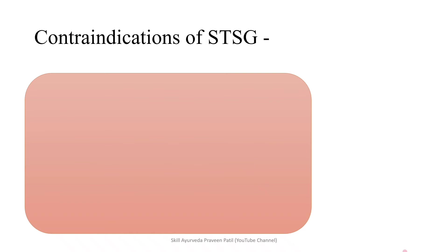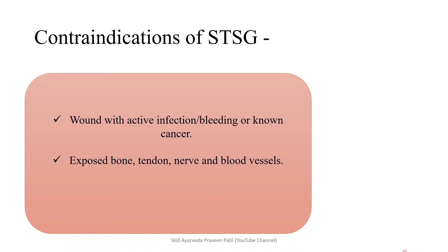Contraindications for STSG include wounds with active infection, as there is more chance of rejection or bleeding and hematoma formation. Known cancerous patients are also a contraindication, as cells keep growing and there will be no acceptance. Exposed bone, tendon, nerve, and blood vessels are contraindicated because the periosteum is nourished by diffusion only, so there is no chance of neovascularization and the graft will be rejected. The same applies to exposed tendon, nerve, and blood vessels.